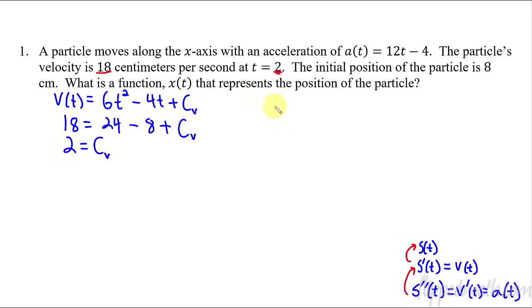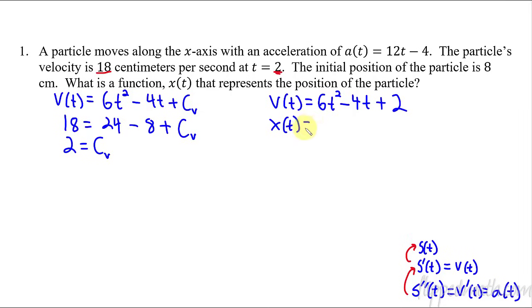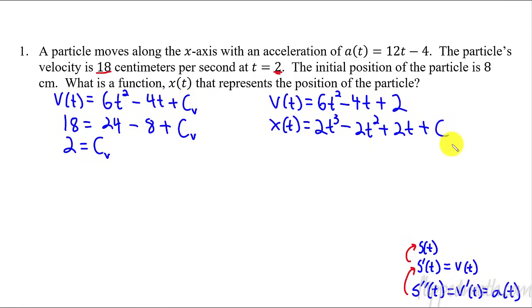So now we can say, if the velocity is this whole thing, then the position function x of t is going to be the antiderivative of this. Let's go up one step — take the integral of velocity. And that leaves us with the antiderivative plus c at the very end. I'm going to call this c with a little x here, just to remind me that it's the position function constant.